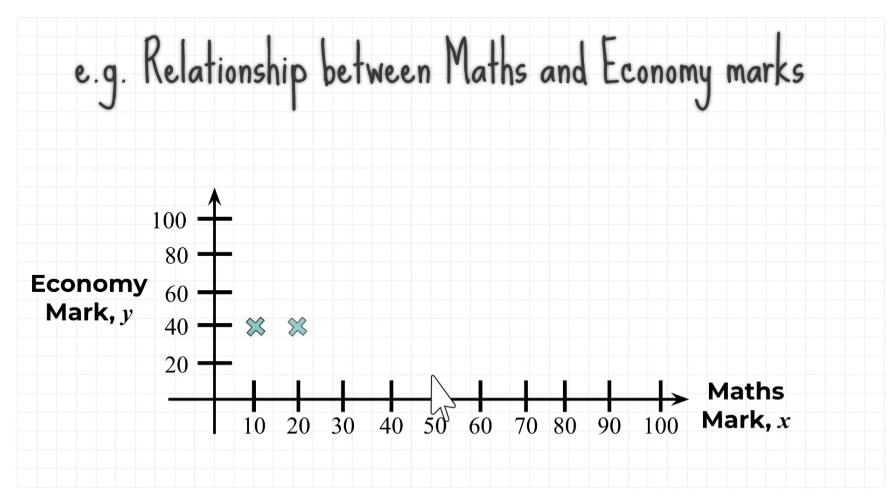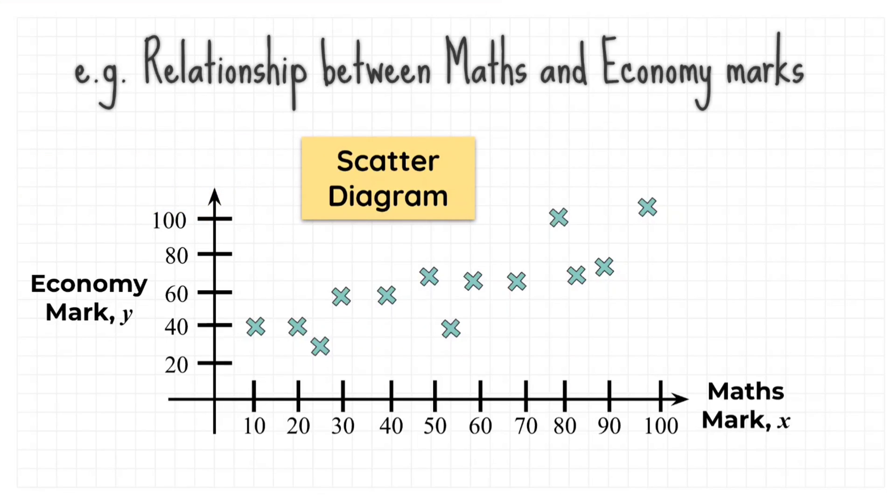There exists maths mark on the x axis and economy marks on the y axis. These are called scatter diagram. From this scatter diagram, we can obtain the best fitted line.